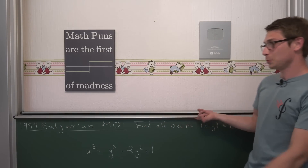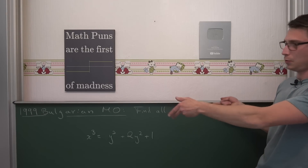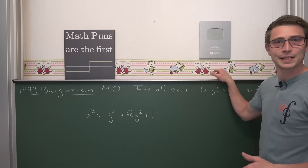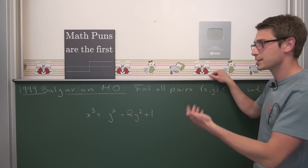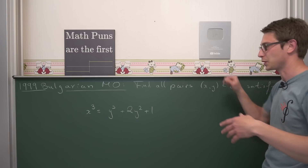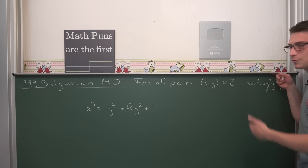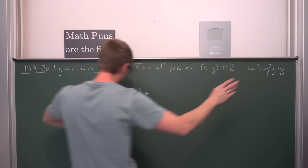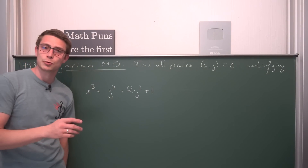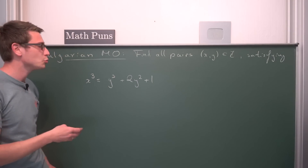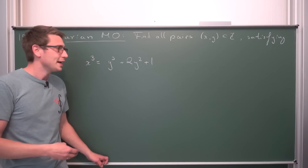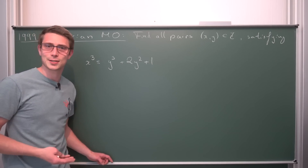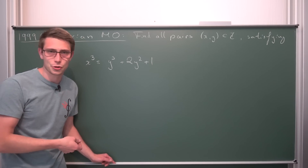Today, another one from the Bulgarian Mathematical Olympiad, the 1999 one. I know one of the last videos was also about that, but we got some good questions on this very paper, so I felt like covering another one. We need to find all the positive and negative integer pairs x and y satisfying this beautiful cubic equation: x cubed equals y cubed plus 2y squared plus 1. It's a lot of fun putting bounds on this equation and finding the solutions. I hope you are going to enjoy the video.